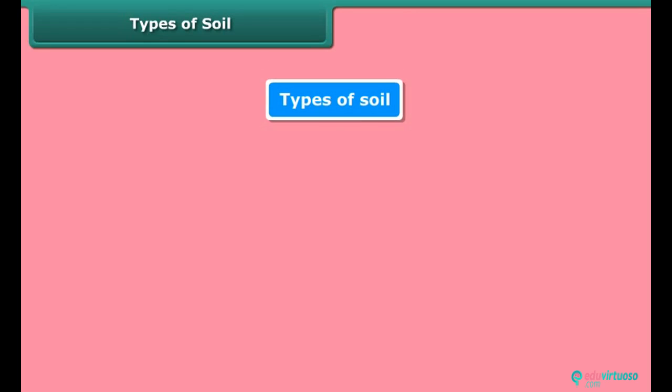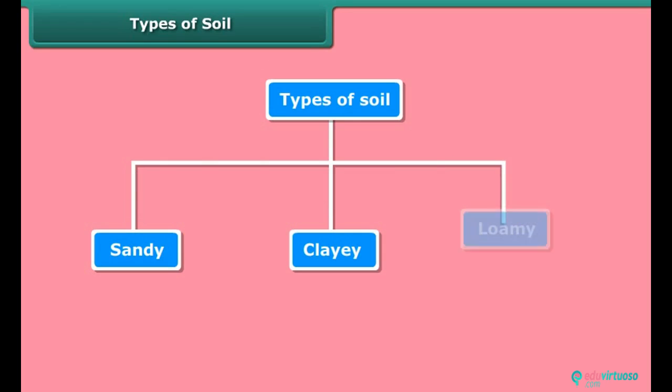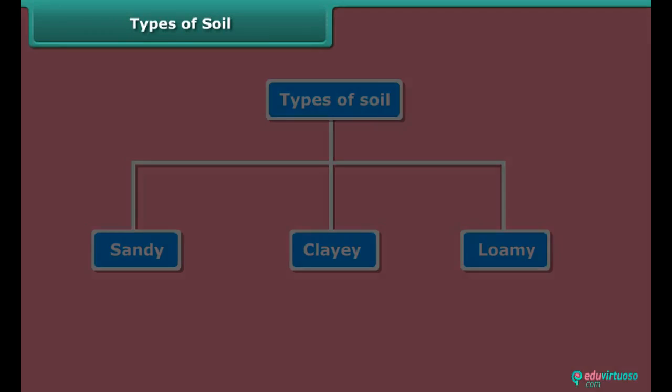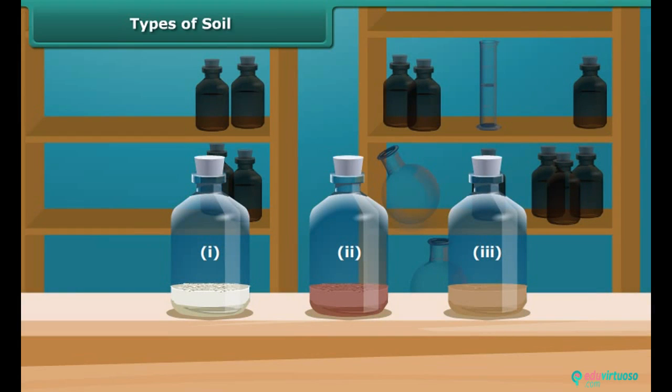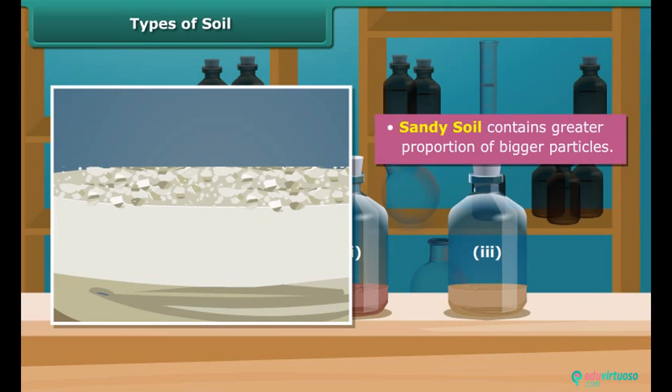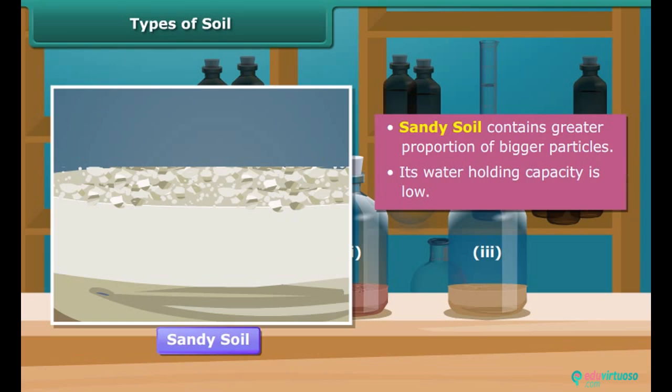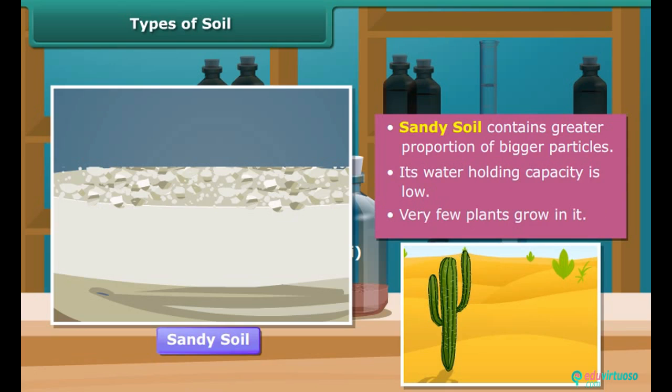Types of soil: There are basically three types of soil: sandy, clay and loamy. Let's take three samples of soil and examine them one by one. We can see the first sample contains greater portion of bigger particles. So this is a sandy soil. Its water holding capacity is low. Therefore very few plants grow in it.